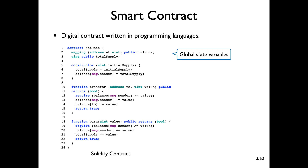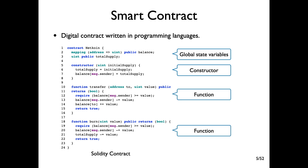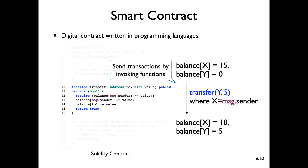First, there are global variables in the contract. There is a constructor function which can be executed only once when deploying smart contracts on the blockchain. There are two public functions which can be invoked by anyone. Users can send transactions by invoking these functions with some argument values. For example, suppose X's balance is 15 and Y's balance is 0. Then X can send the transaction for sending 5 tokens to Y by invoking transfer with the arguments in the slide.